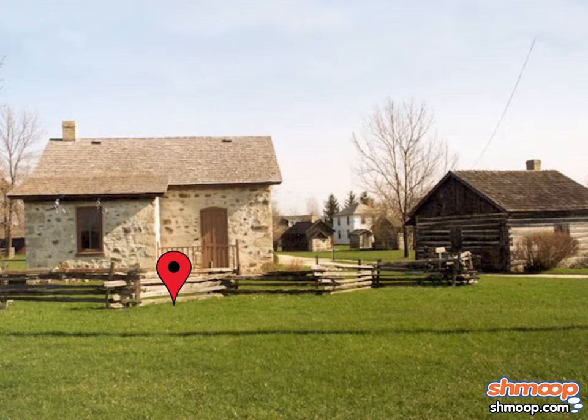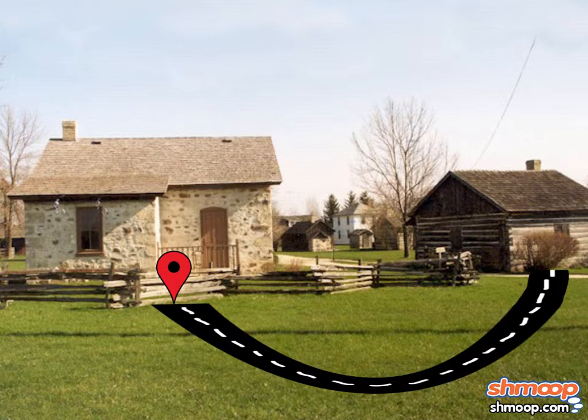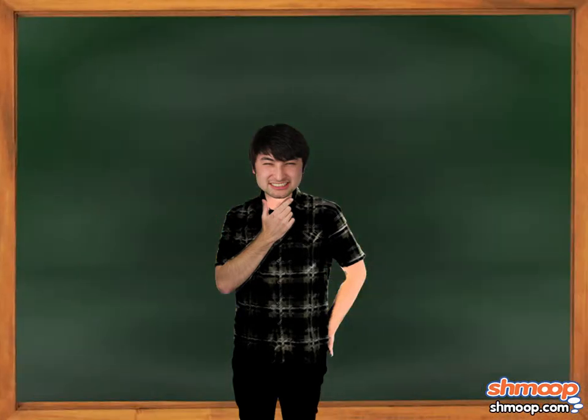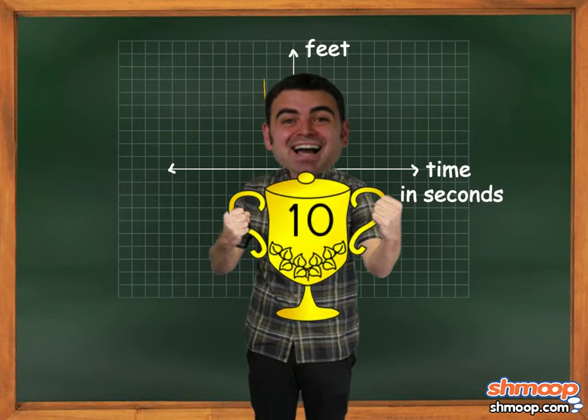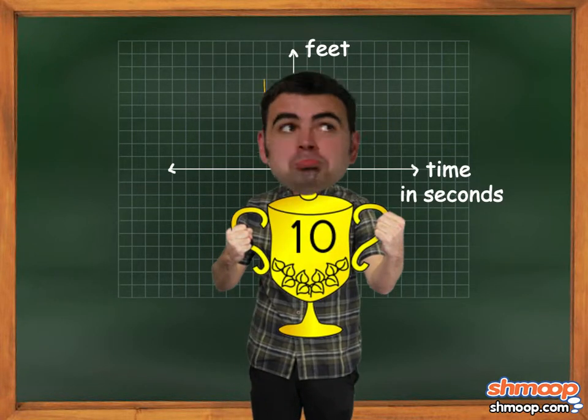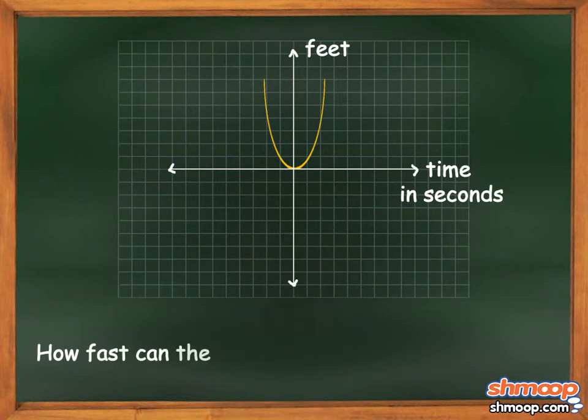He starts at his house and decides to have the finish line at his friend's house. His friend, Mr. Macadamia Nut, decides to help him by drawing a graph of his distance traveled in feet versus time elapsed in seconds. Because Mr. Snickerdoodle's favorite number is 10, he wants to figure out how fast the car can go at time equals 10 seconds.